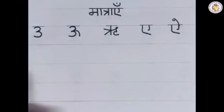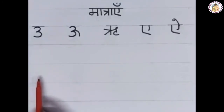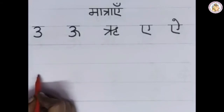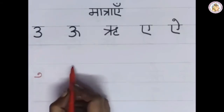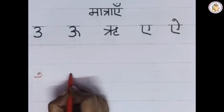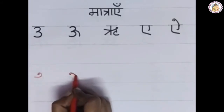Next letter is 'u'. Let us learn how to write 'u' Matra. Below the vyanjan, draw a hook like this and bend it towards the right side. This is the 'u' Matra. For 'oo' (Badi u), below the vyanjan, draw a hook and continue to draw a slanting line towards the bottom. This is the 'oo' Matra.